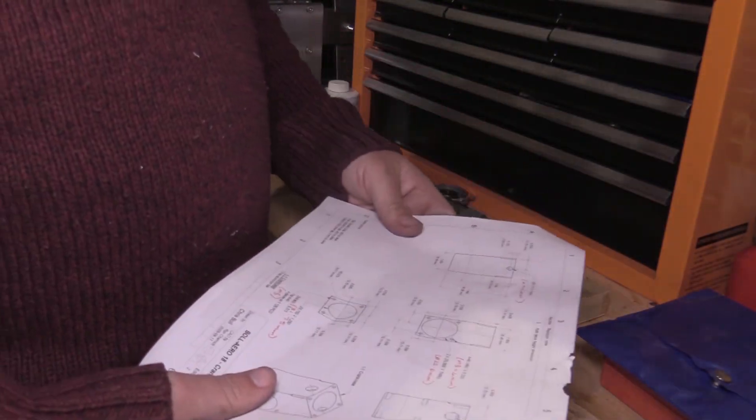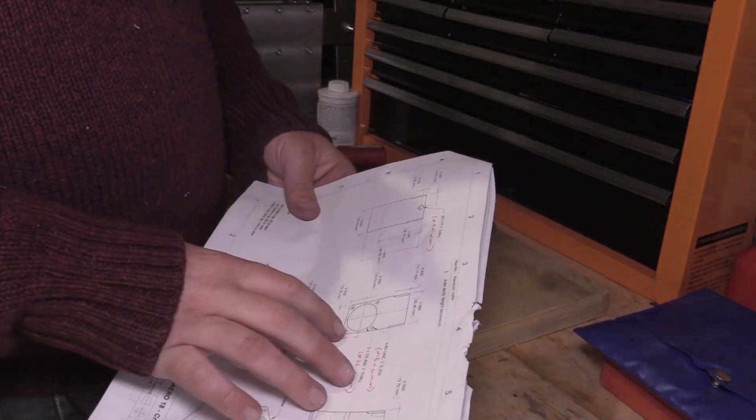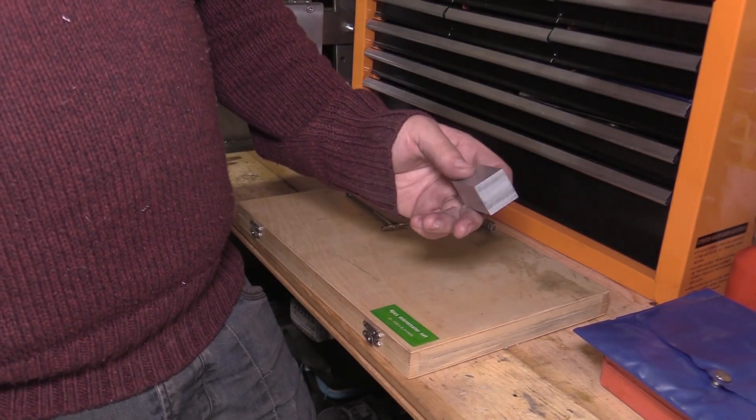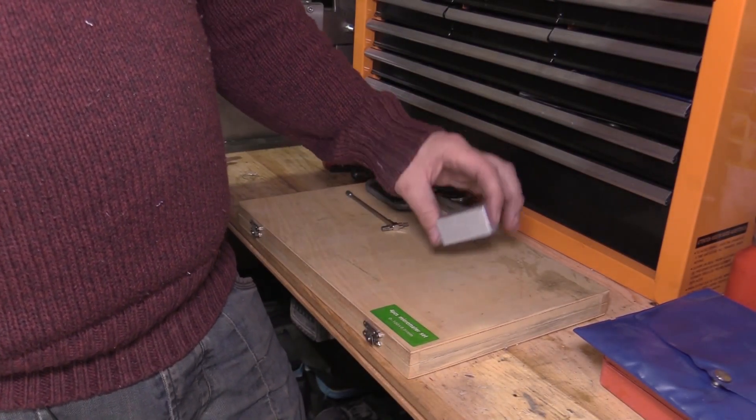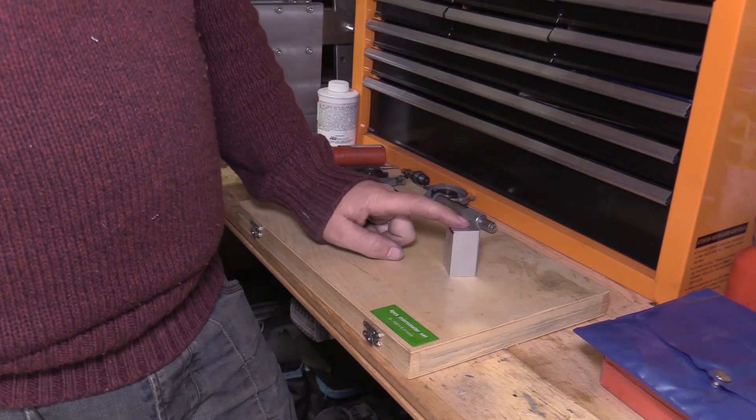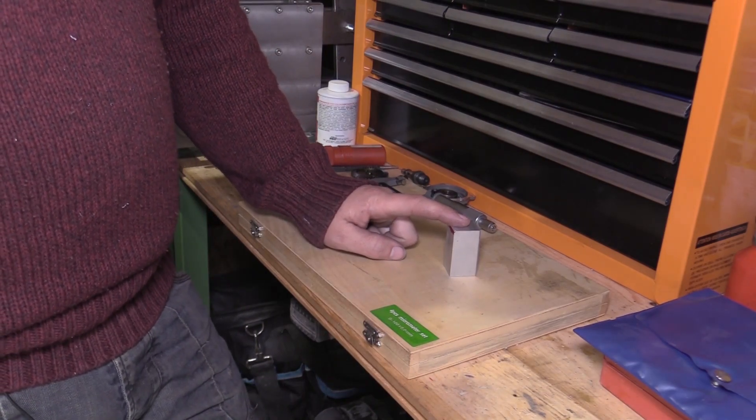So in this video I'm going to be starting with the crankcase, which is made out of one inch square aluminum bar. I've already cut and faced off one end of this bar down to the right size.